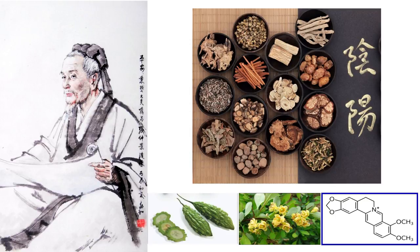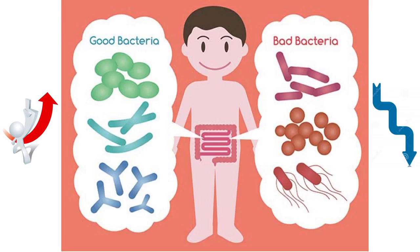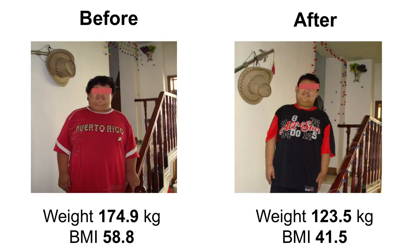We found that non-digestible but fermentable carbohydrates and some phytochemicals in traditional medical food in China are potent ingredients for modulating the gut microbiota to a healthier structure. A new diet scheme that provides balanced nutrients for both the human host and the gut microbiota — which we call the 'Fit My Gut Microbiota Diet' — can encourage the growth of beneficial bacteria and reduce the level of bad, obesity-inducing bacteria.